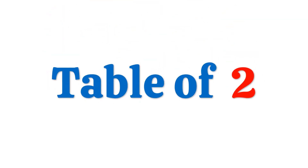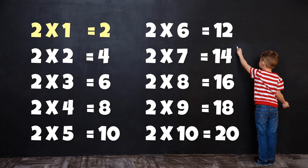Table of 2: 2 times 1 is 2, 2 times 2 is 4, 2 times 3 is 6, 2 times 4 is 8, 2 times 5 is 10, 2 times 6 is 12, 2 times 7 is 14, 2 times 8 is 16, 2 times 9 is 18, 2 times 10 is 20.